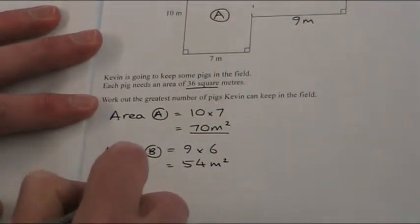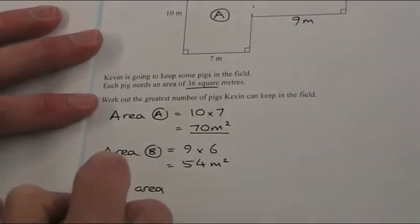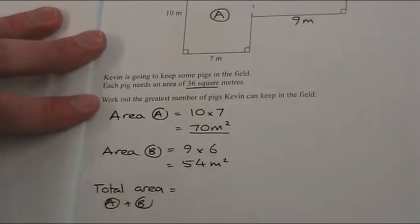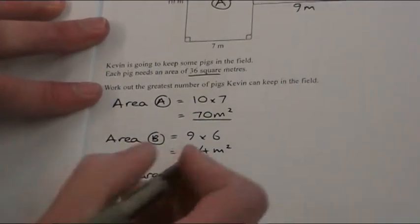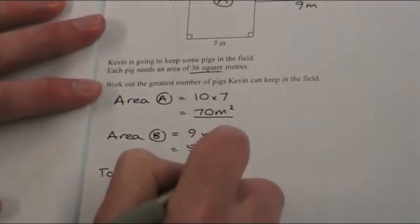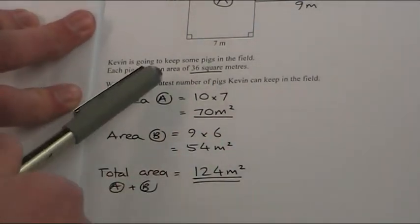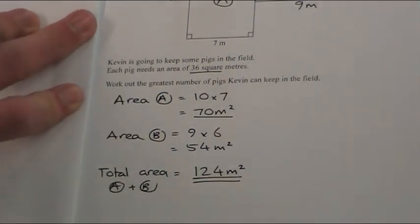The total area, A plus B, is 70 plus the 54, which is 124 square meters. Now, if you're looking for clarity, everyone would understand that.